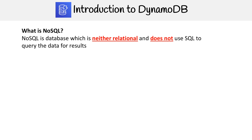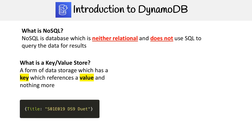To really understand DynamoDB, we need to understand what NoSQL is. It is neither a relational database, and does not use SQL to query data. The key thing that's different is how the data is stored — it can be either key-value or document. A key-value store is a form of data storage which has a key that references a value and nothing more.